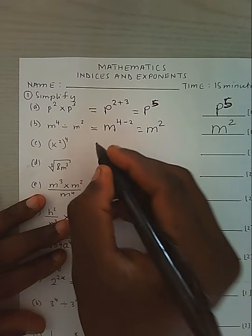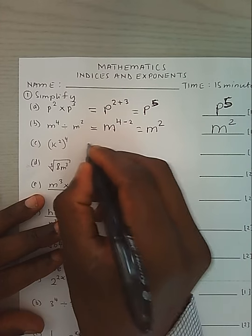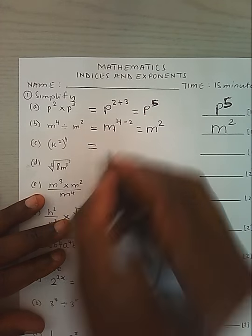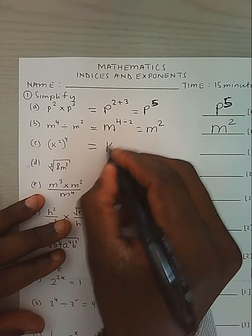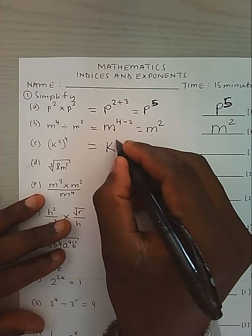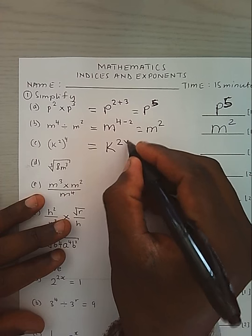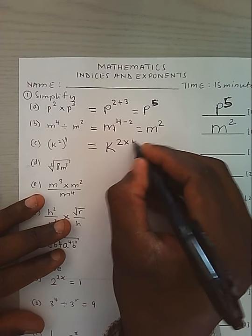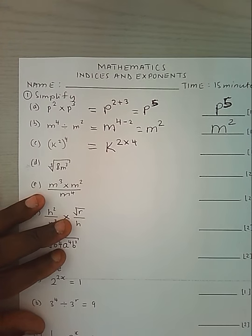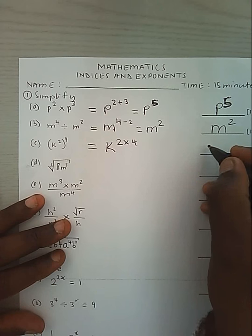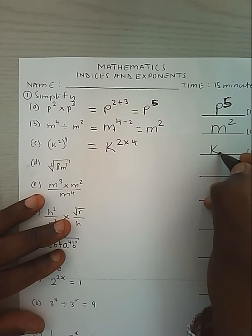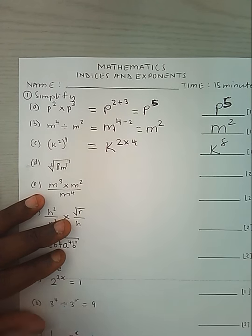Again, as we saw, same base with a power outside the brackets, we shall multiply the powers. This will give us k power 8.